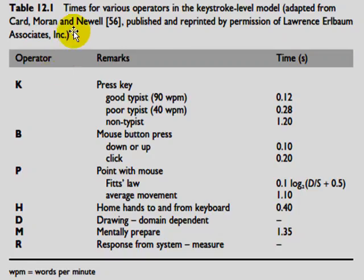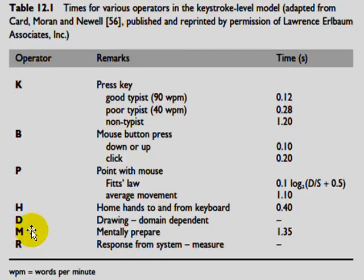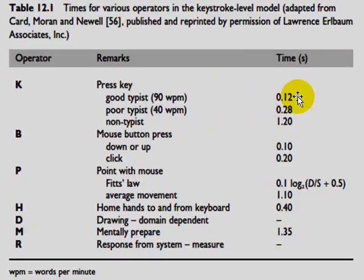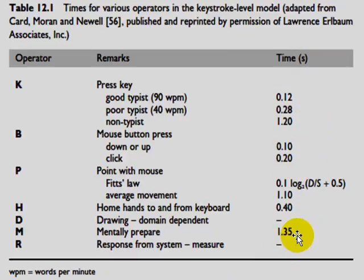This statistical data is taken from Lawrence Halbram Associates and is also available in textbooks. It lists the different operators and their values — for example, for K it gives the keypress time for a good typist versus a poor typist in words per minute and seconds per keystroke. These values are statistically calculated. The maximum value is 1.35 seconds, which is for mental preparation.